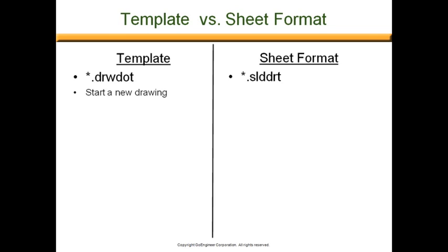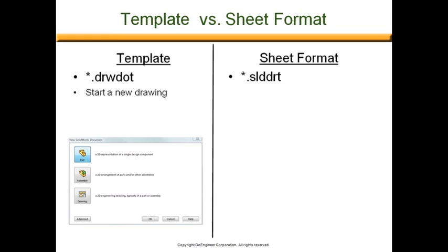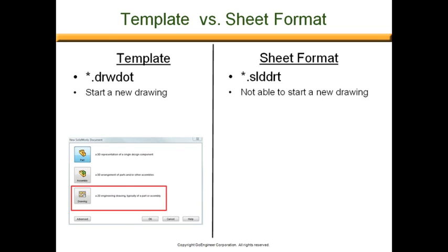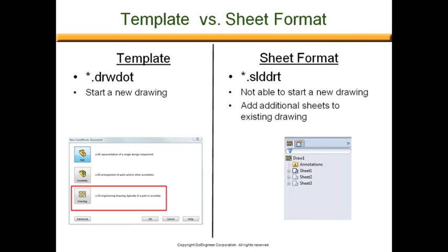Each item has specific functions. The drawing template is used to start a new drawing. The sheet format is not capable of starting a new drawing — it is only capable of adding additional sheets to an existing drawing.